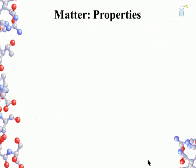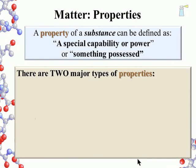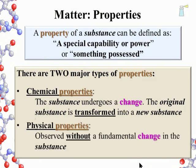Changes in matter was concerned with whether or not a chemical process had occurred. Properties of matter is also concerned with change, but digs deeper into the fundamental essence of matter. A property of a substance can be defined as a special capability or power or something possessed. There are two major types of properties concerning matter: chemical properties and physical properties. We will start with chemical properties.